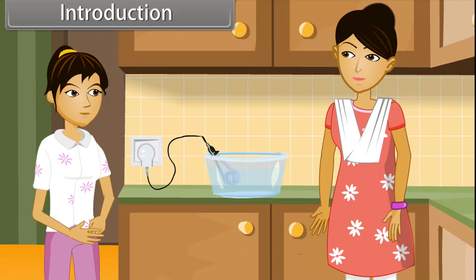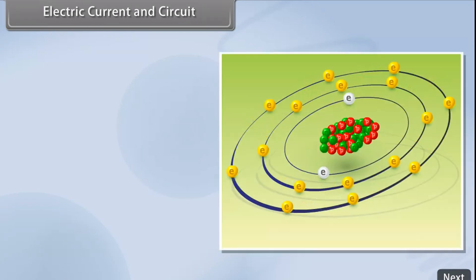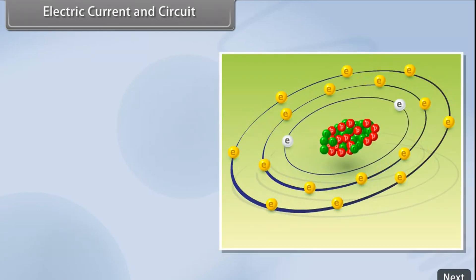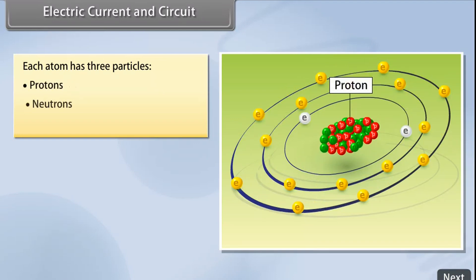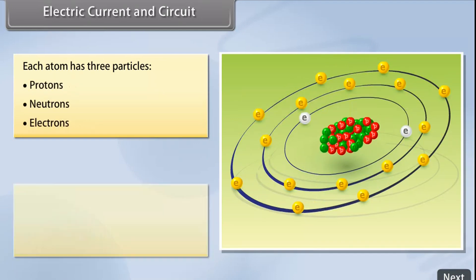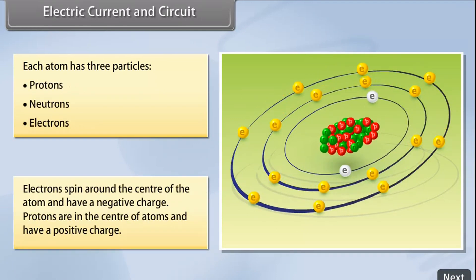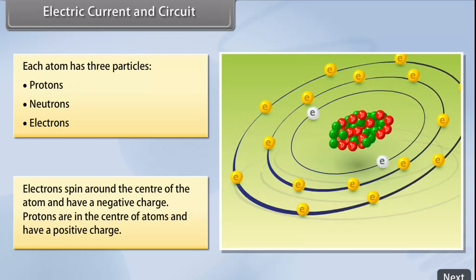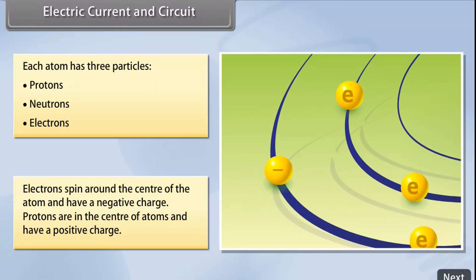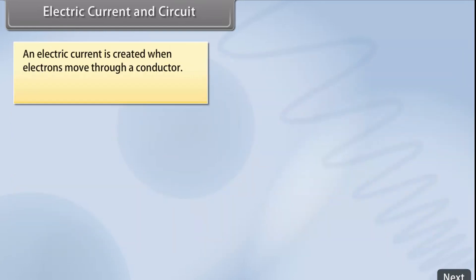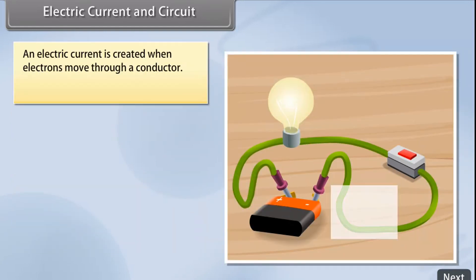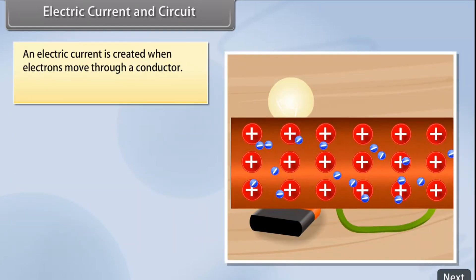Let me explain this to you. Children, in this lesson you will learn about electric current and circuit. All things around us are made up of atoms. Each has three particles: protons, neutrons, and electrons. Electrons spin around the center of the atom and have a negative charge. Protons are in the center of atoms and have a positive charge. An electric current is created when electrons move through a conductor.